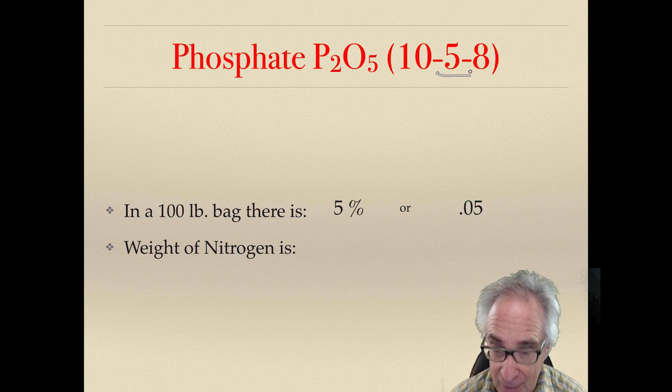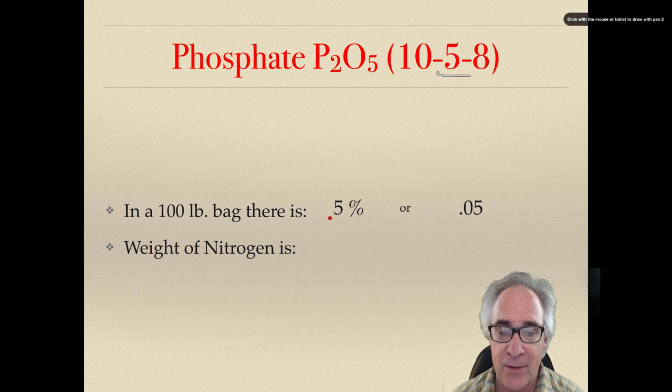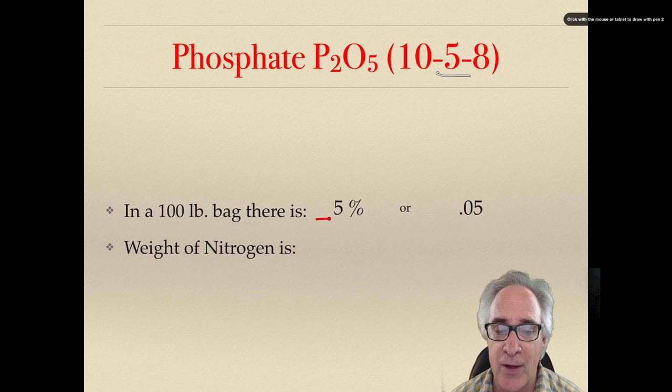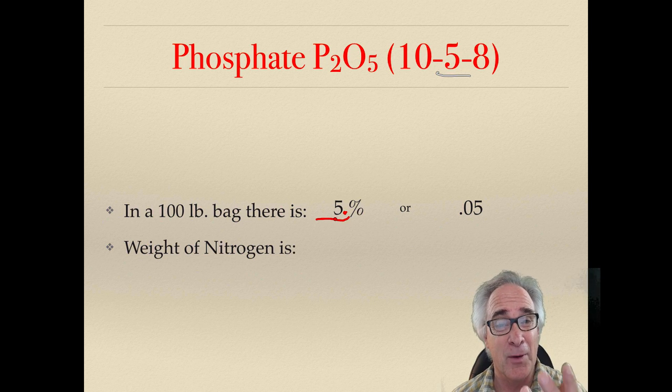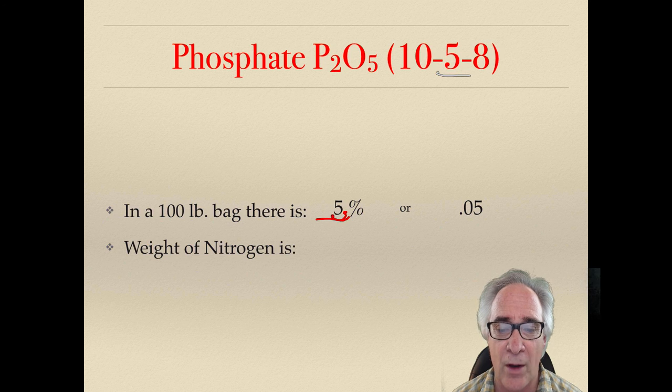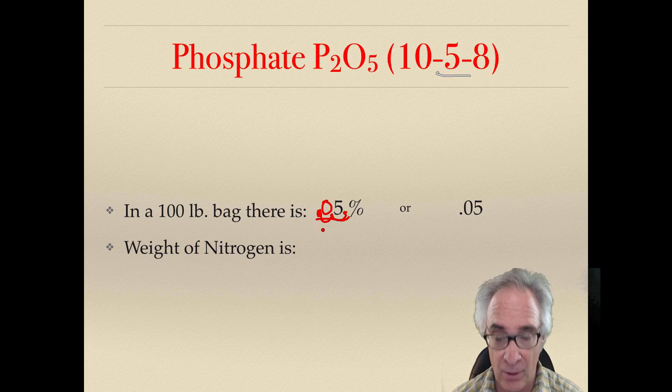And to kind of give you a little heads up on this, when it's 5%, you've got to convert it into decimal. The way you do that is just move it because it's 100. Remember, percentage is 100. So you're going to move it twice, one, the decimal once, twice. So I put a zero there. So it's .05.